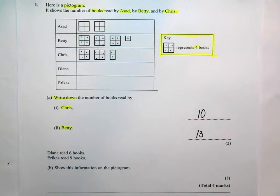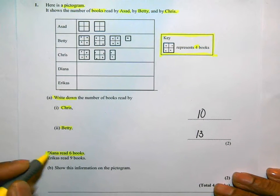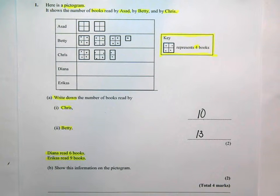Then we get to the last part. It said, Diana read six books. And Eric Cass read nine books. Show this information on the pictogram. They want you to actually draw it on the pictogram. Now in my case, whenever I'm doing stuff like this, I actually do like using a ruler.